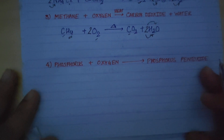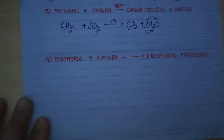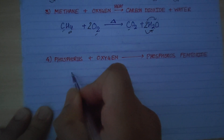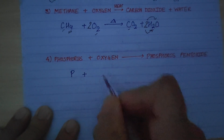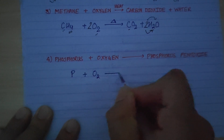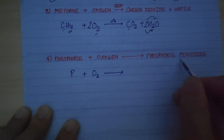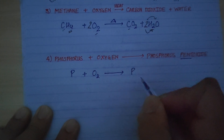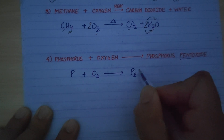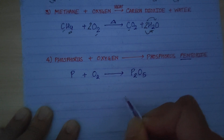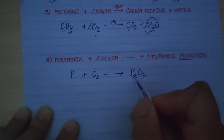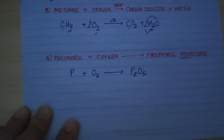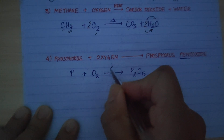The last example: phosphorus plus oxygen gives phosphorus pentoxide. Phosphorus is P, oxygen is O2, and phosphorus pentoxide — penta means 5 — is P2O5. Using the crisscross method from a previous video, phosphorus pentoxide is P2O5: oxygen gets 2 and phosphorus gets 5. In this equation there is also heat, so we add a triangle sign since it is a burning reaction.